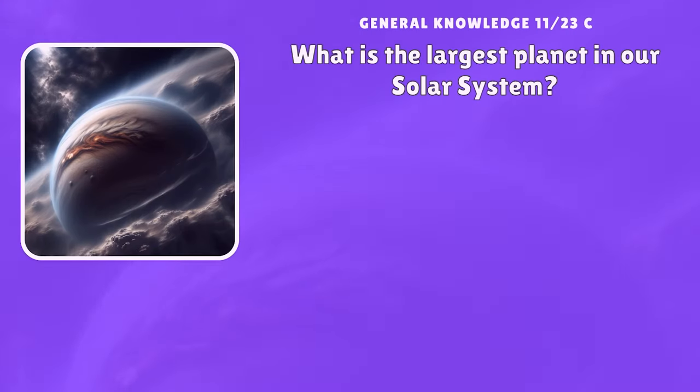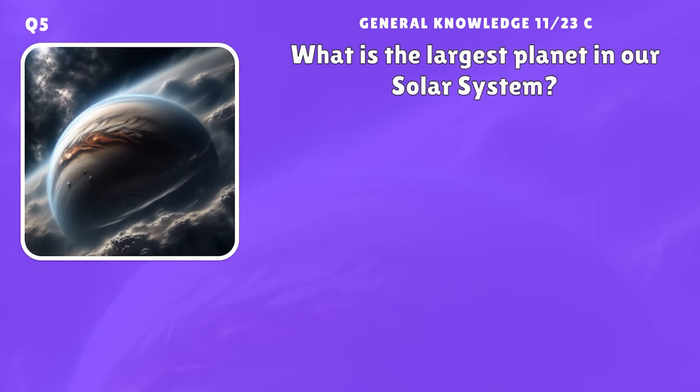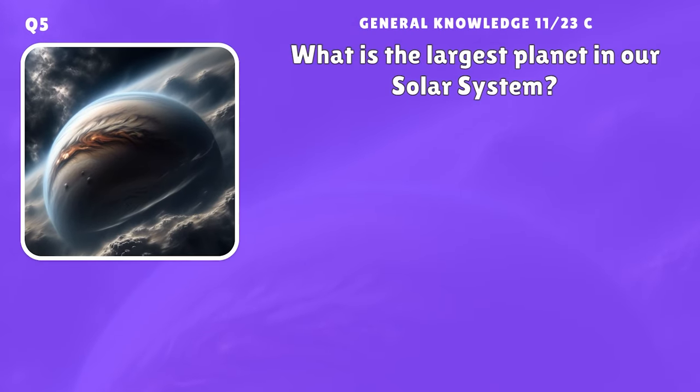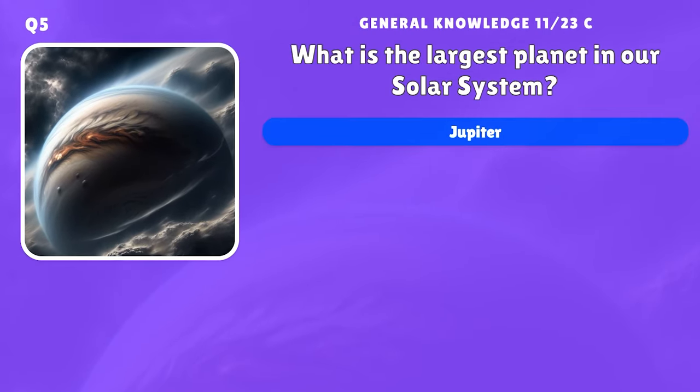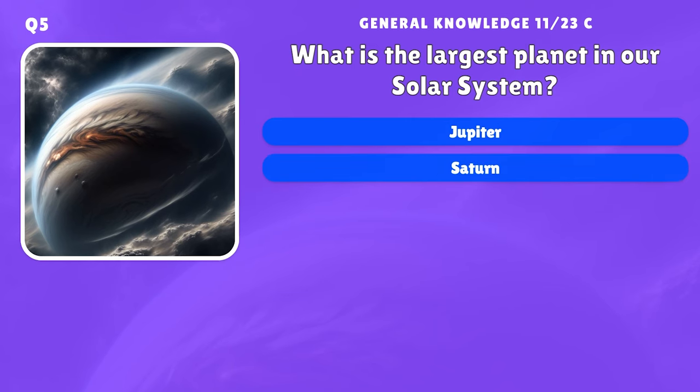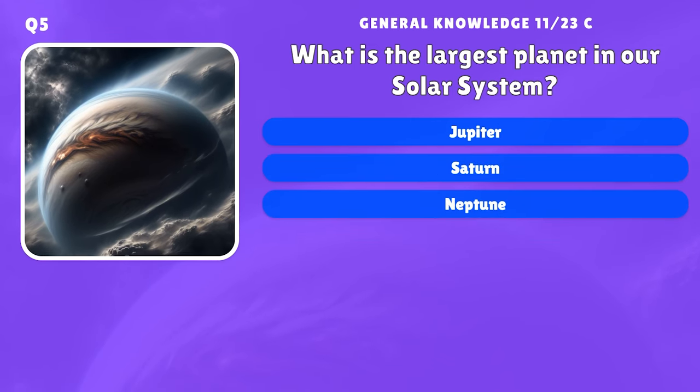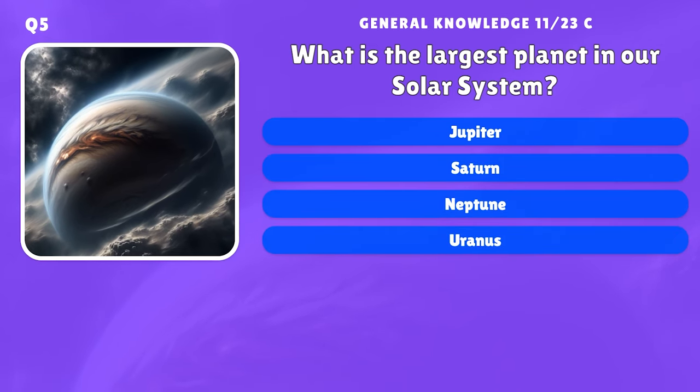What is the largest planet in our solar system? A) Jupiter, B) Saturn, C) Neptune, D) Uranus.